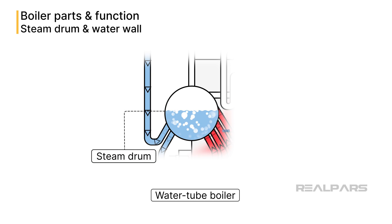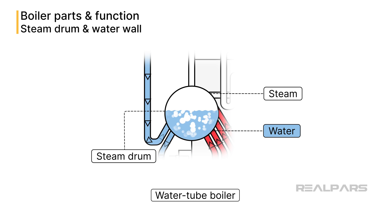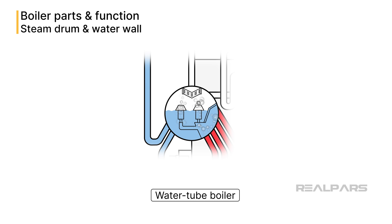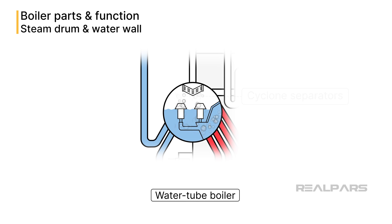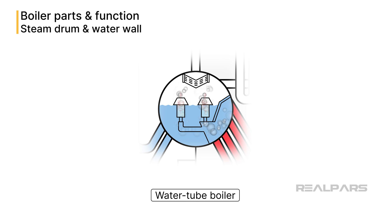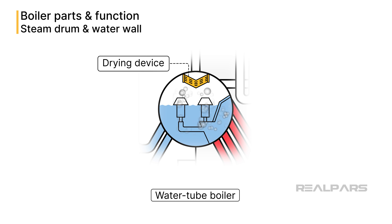The steam drum is partially filled with water, and the upper part is reserved for steam. Inside the drum, the water-steam mix hits baffles that change its direction, helping to separate the steam from the water. Then it moves to cyclone separators, which use centrifugal force to remove any remaining water drops, and the steam rises to the top part of the drum. To make sure the steam is completely dry, it might go through extra moisture separators or drying devices.